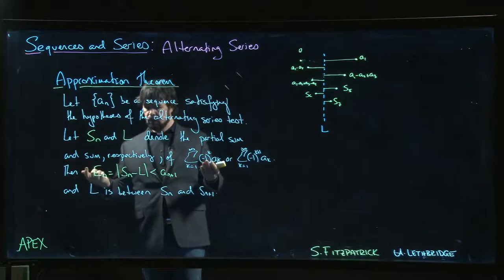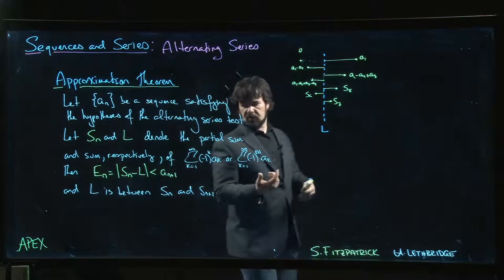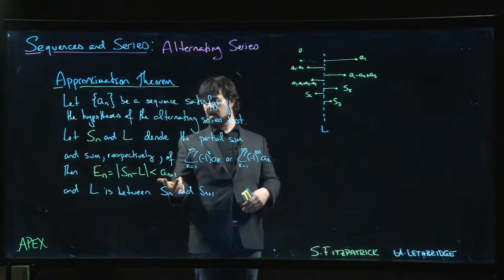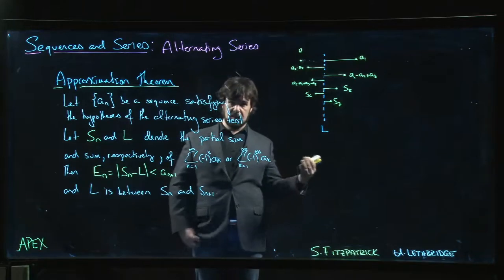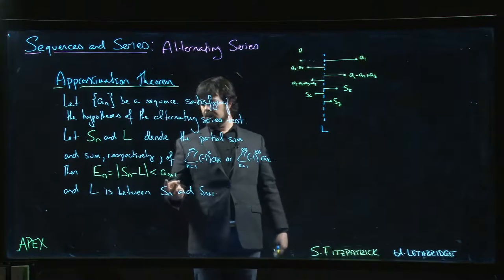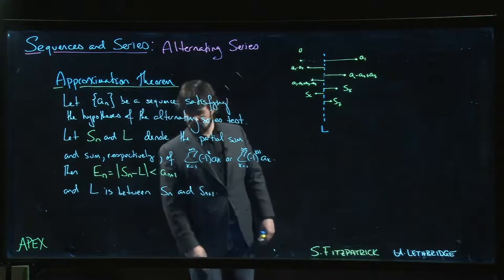We can calculate the next term, figure out how big it is, and that lets us say, hey, this gives us a bound on the error. And that means if it's good enough to know the sum of the series accurate to three decimal places, well we just have to keep going until these numbers are small enough. Once they're less than one over five thousand, then we know we've got the answer accurate to five decimal places.